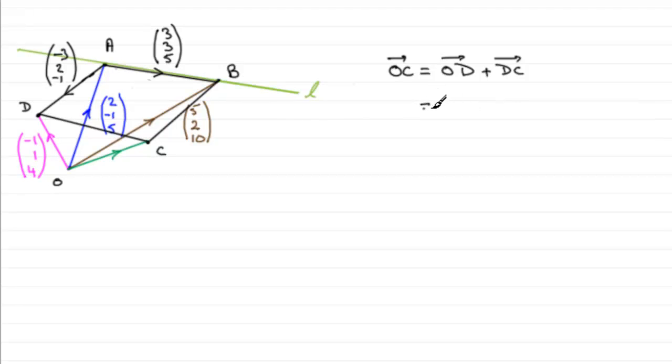Now, because it's a parallelogram, I mean, I know the vector O to D, that's fine. But as far as the vector D to C goes, well, being a parallelogram, it's got to be the same as the vector A to B. So we can say that that's the vector A to B.